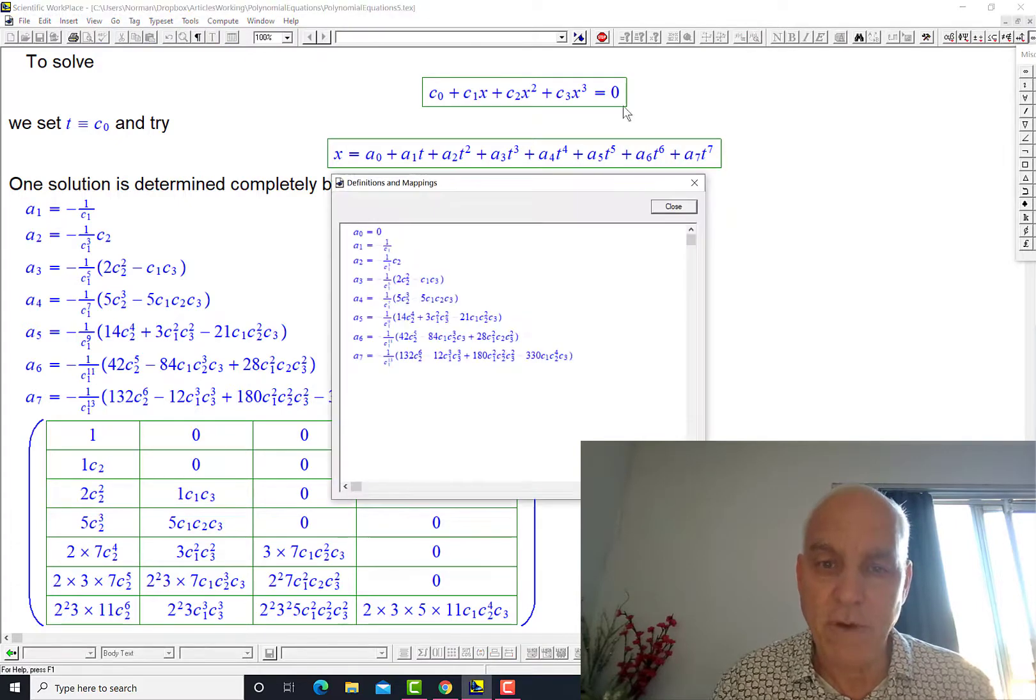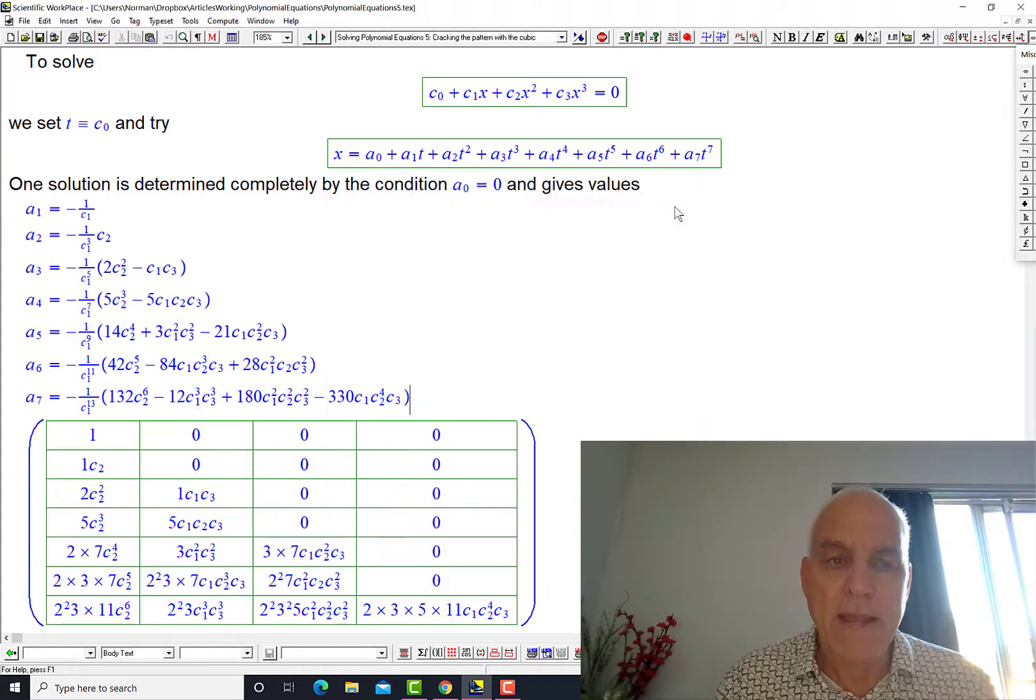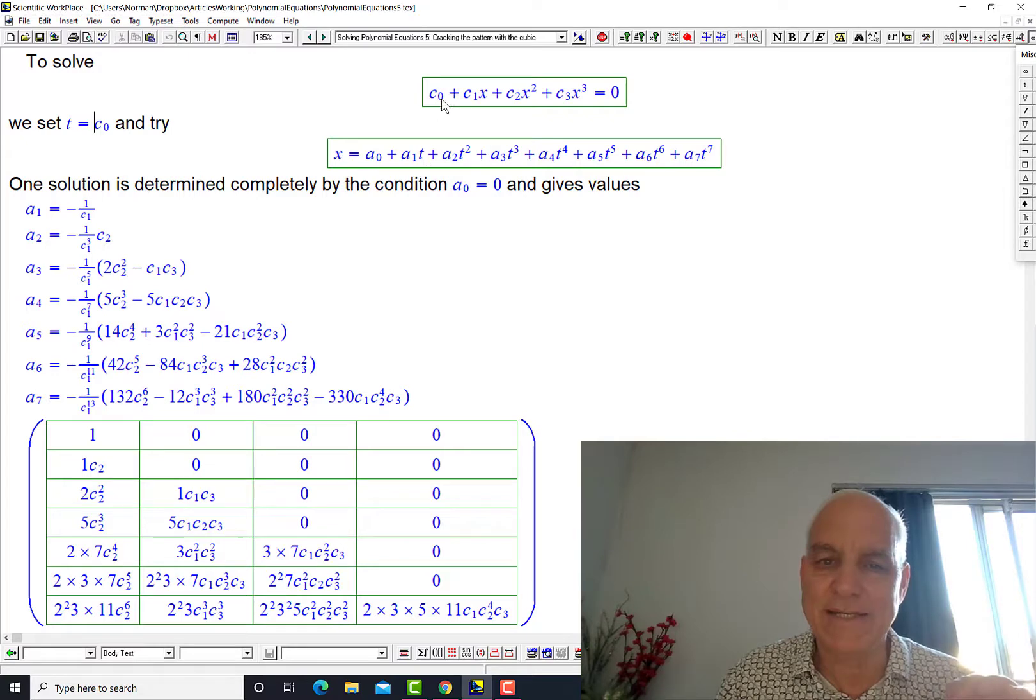I'll check that I have them all there. A 0, 1, 2, 3, 4, 5, 6, 7. Yes, they're all there.